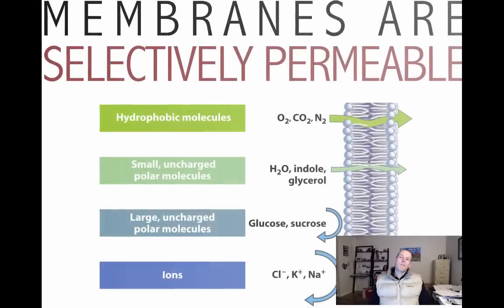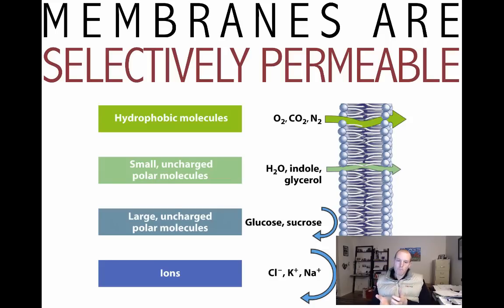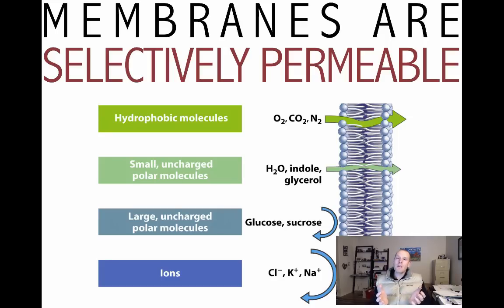The first thing about cell membranes is that they are selectively permeable, and that's the most important thing you have to take from this. If there's any take-home message, it's that membranes are selectively permeable. Our goal here is to look at the structure of the membrane and relate it to the function, and the function is one of selective permeability. Something that's selectively permeable will allow some things to pass through it but not others, and this is important because it establishes the inside world of the cell from the outside world.